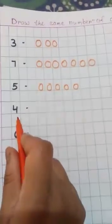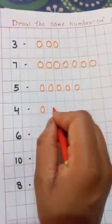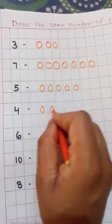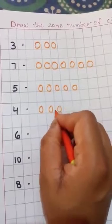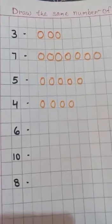Now, draw 4 circles. 1, 2, 3, 4. 4 circles.